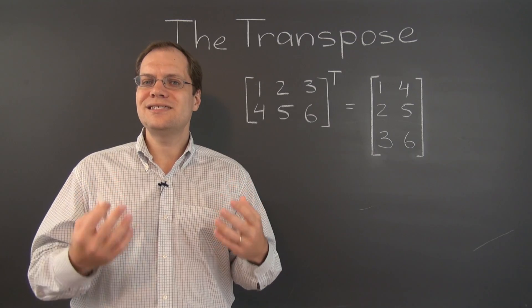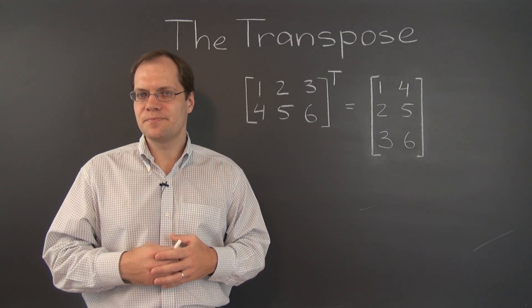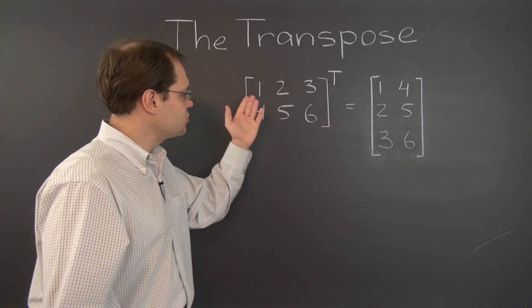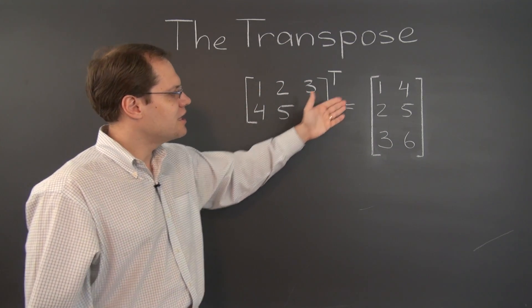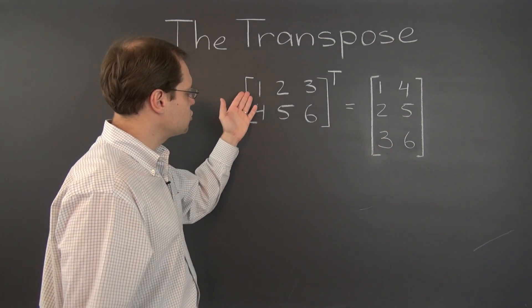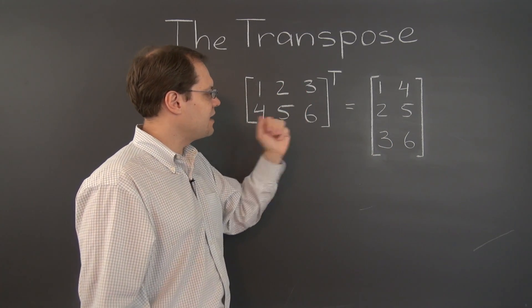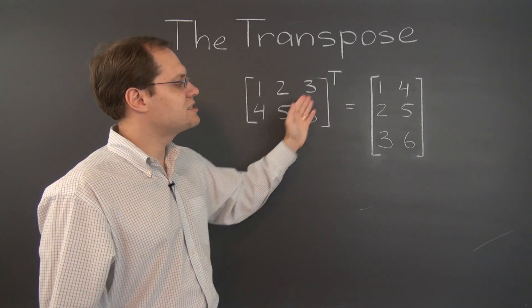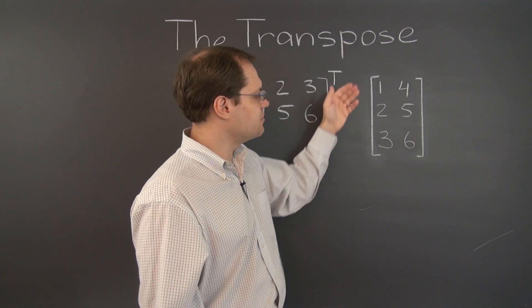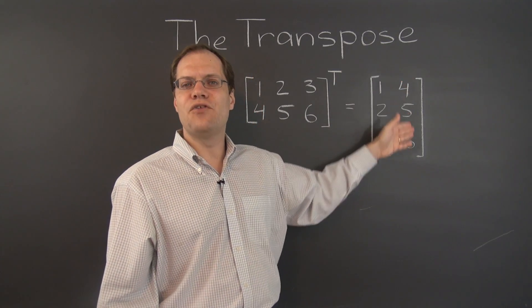So let's start with the definition. There are actually several ways to look at the transpose. Perhaps the simplest way to describe it is as an operation that turns the rows of a matrix into the columns of the resulting matrix. So here we have a matrix whose rows are 1, 2, 3, and 4, 5, 6. So the resulting matrix, the transpose of this one, has columns 1, 2, 3, and 4, 5, 6.